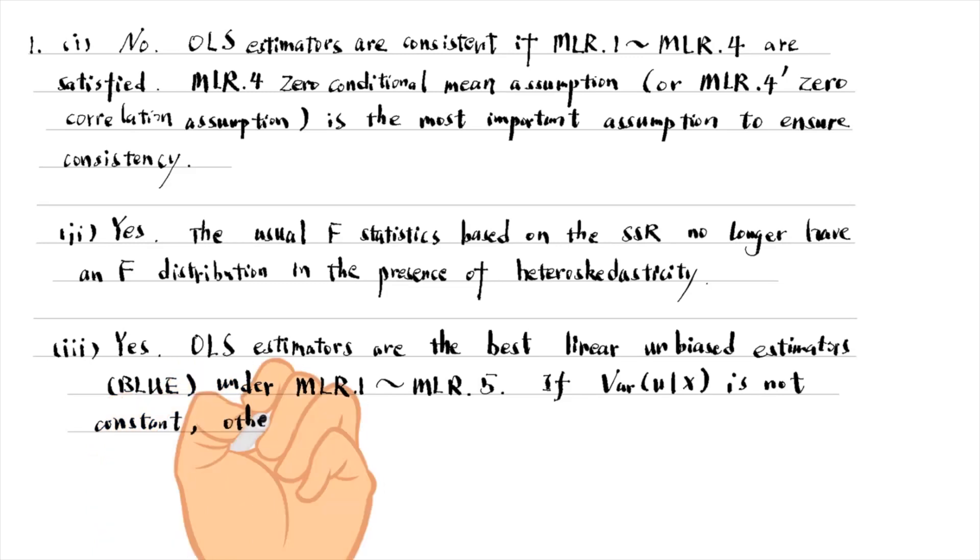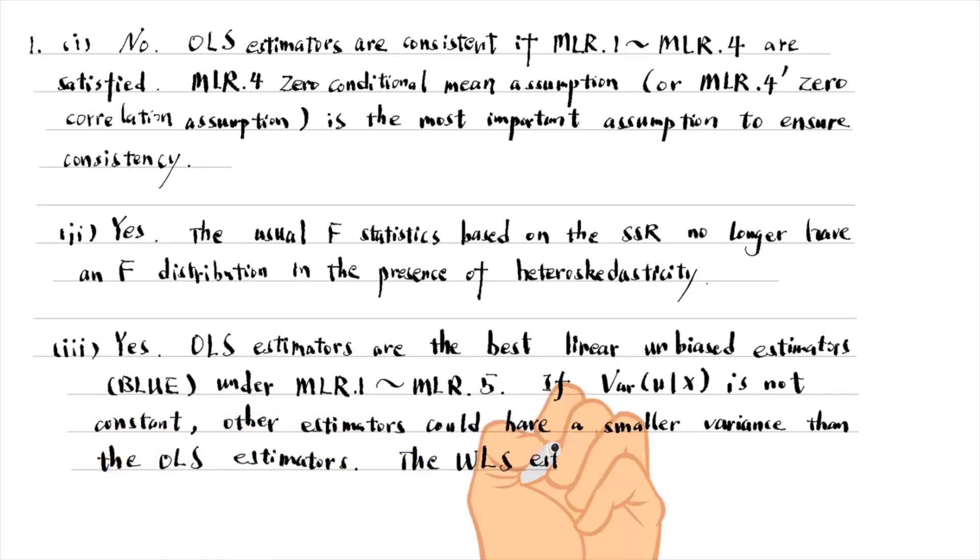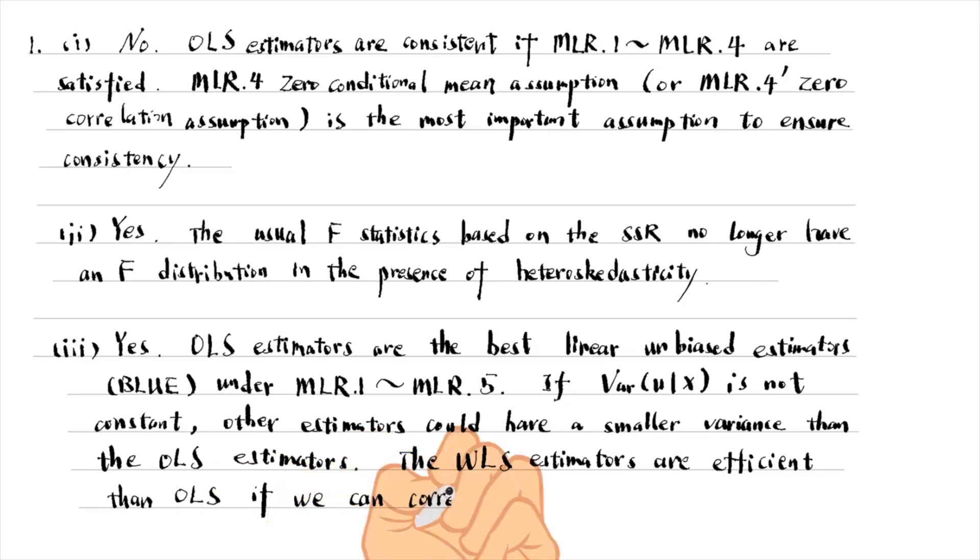For example, the weighted least squares estimators are more efficient, i.e., have a smaller variance than OLS if we can correctly specify the error term's variance.